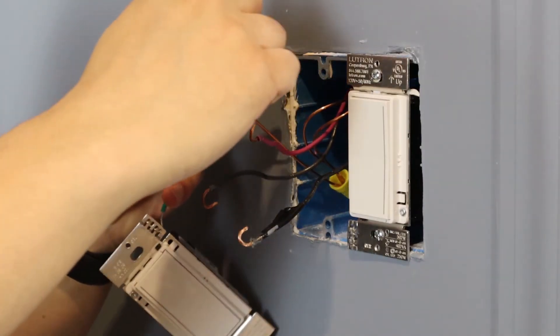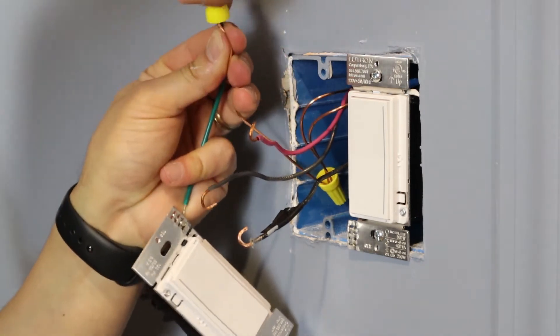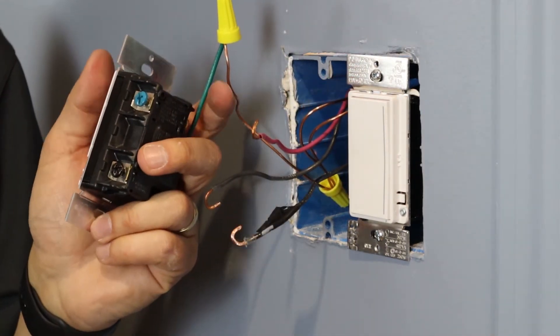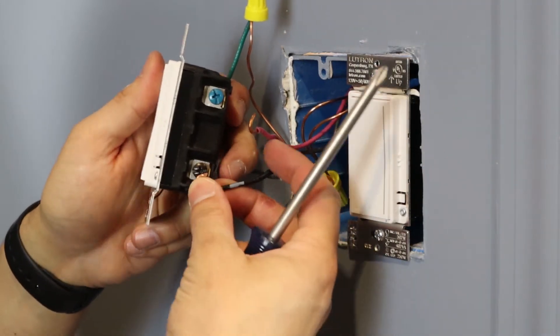Once your switch is removed, you can now connect the green wire to the ground wire from your wall. Next, connect the tagged common wire to the black screw on your dimmer.